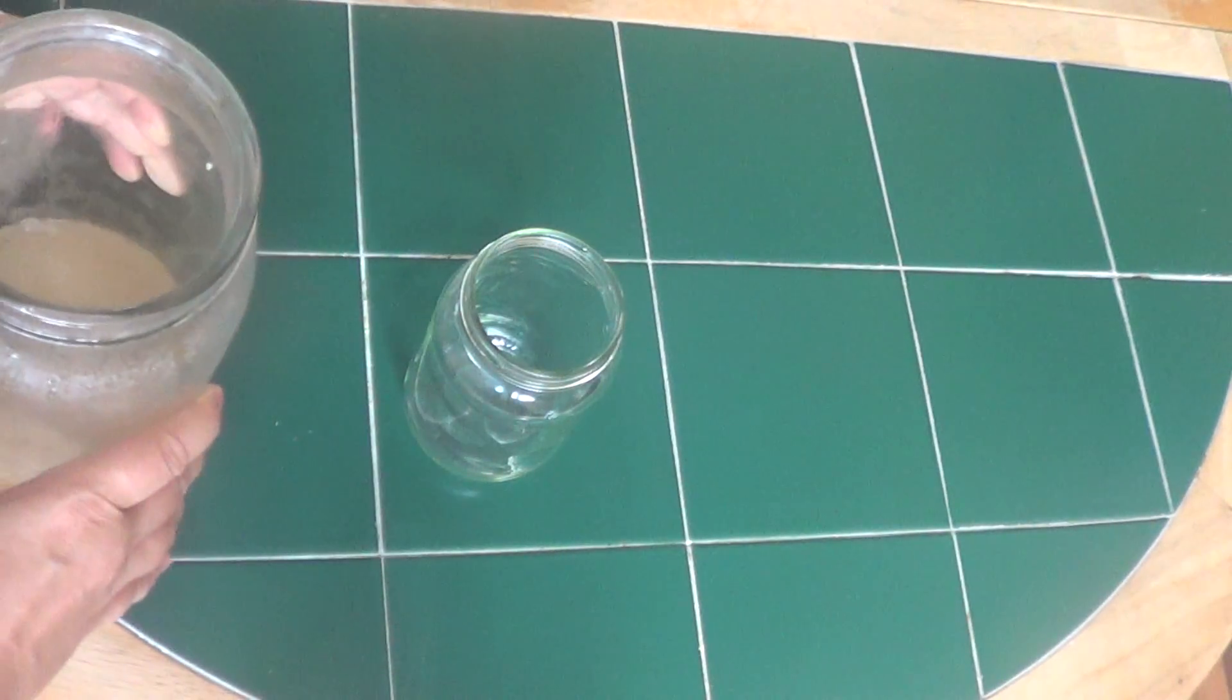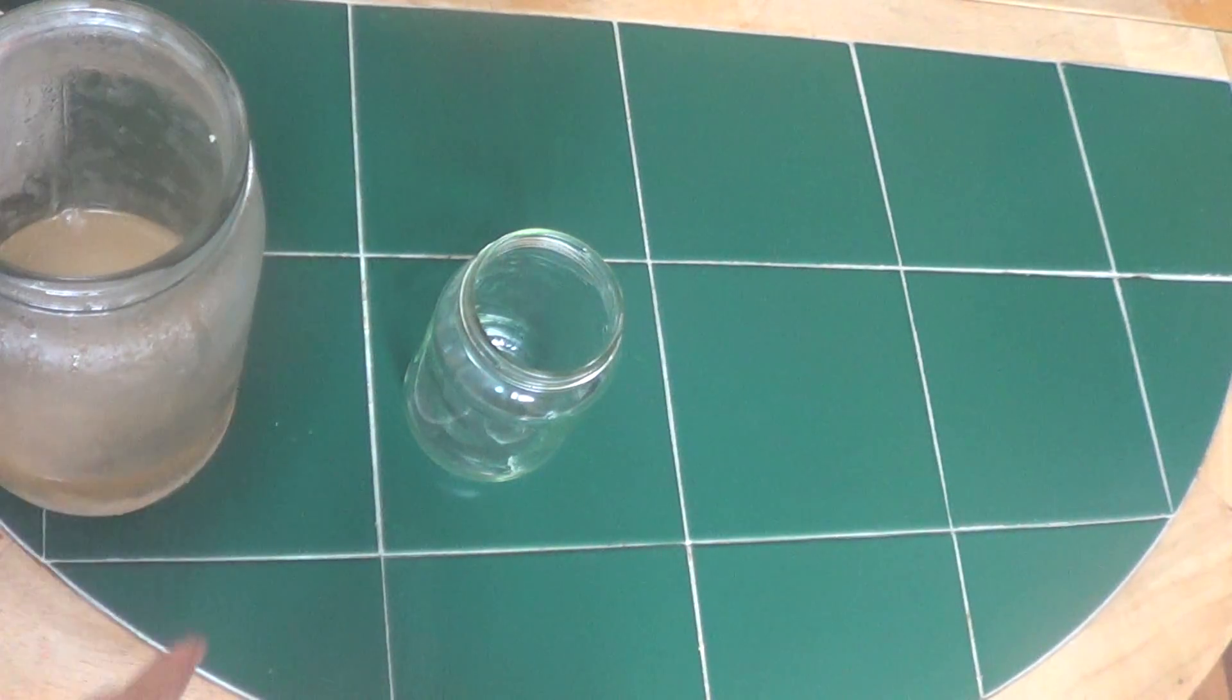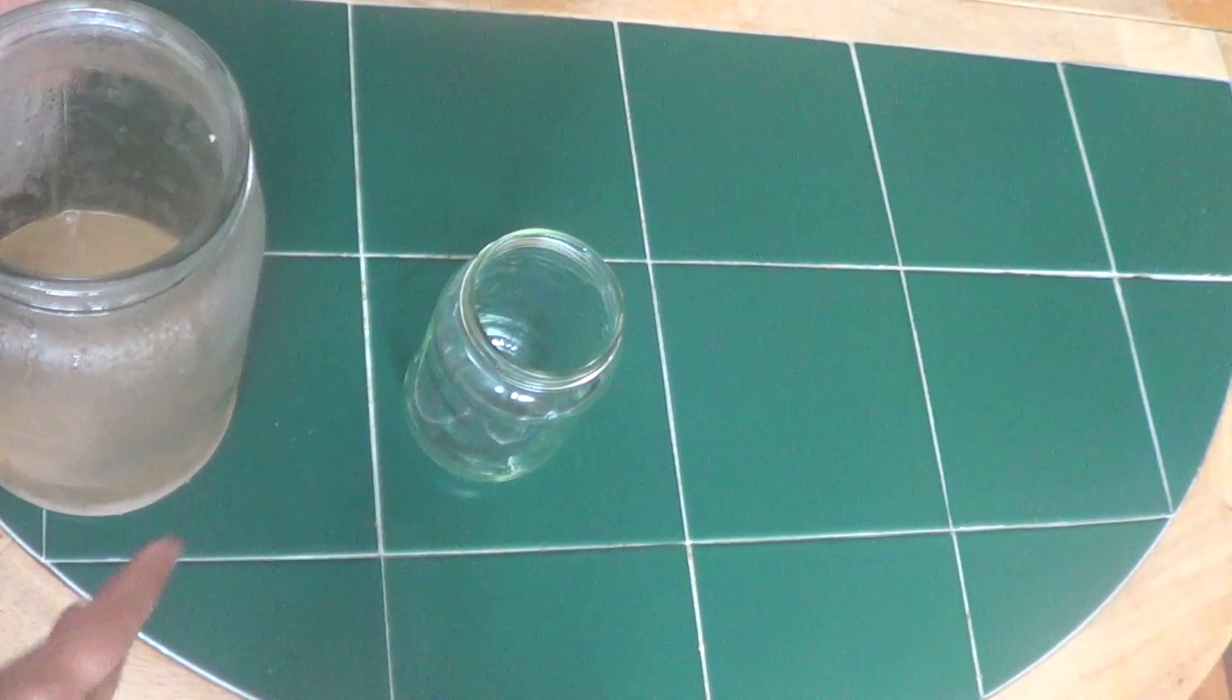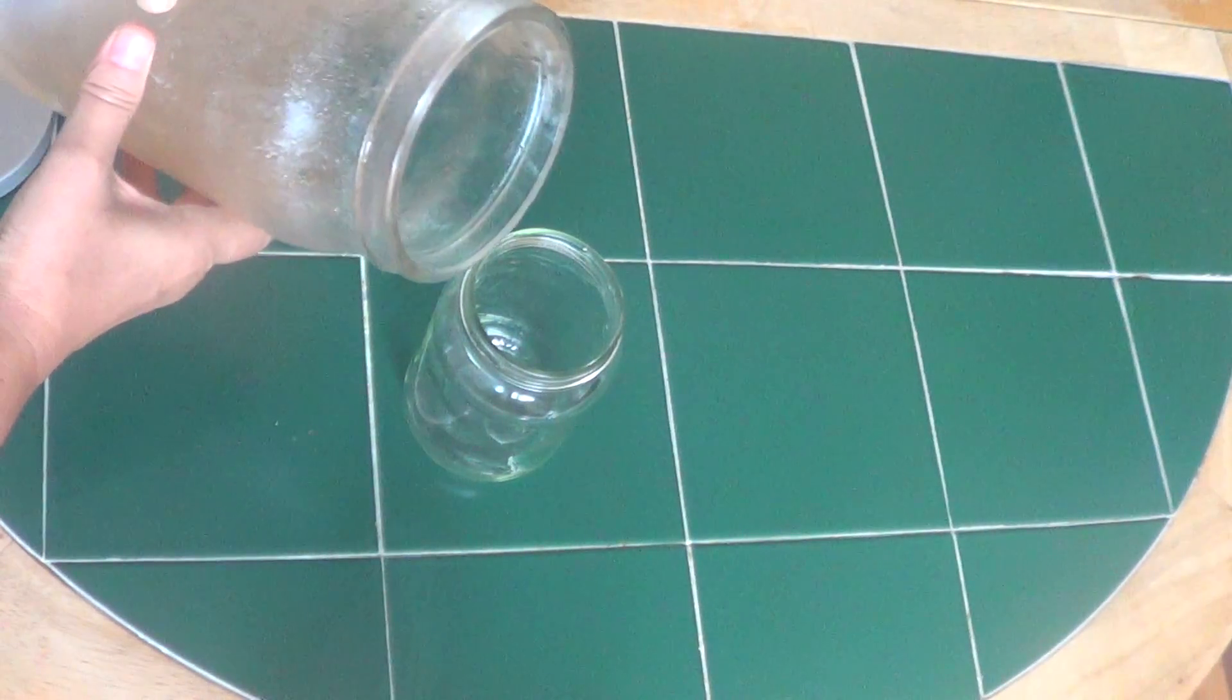Kvass is generally a fermented Russian beverage. You put bread and water, add a little bit of yeast and sugar, put it in a warm place, and you will have nice kvass tomorrow. Let me show you how it looks.